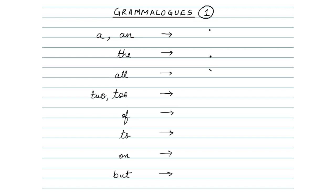Next, we have 'to' or 'two'. We represent these by making the tiny dark stroke again, but this time on the line, like this.